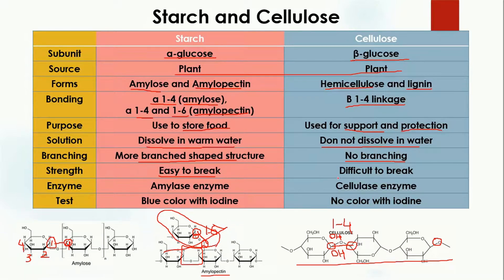Starch is easy to break because of its branches. Cellulose is difficult to break because there are no branches. Starch can be broken down by the enzyme amylase, while to break cellulose we need the enzyme cellulase. For the iodine test, starch gives a blue color with iodine while cellulose does not give any color. That's all about starch and cellulose — you can ask any questions in the comment section.